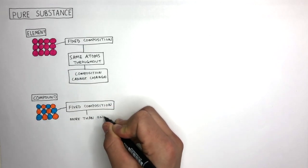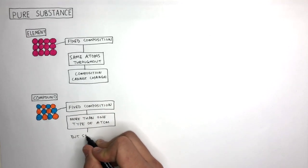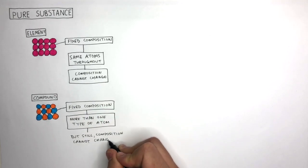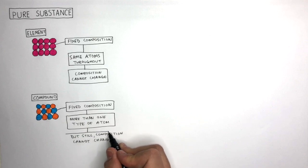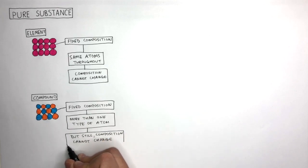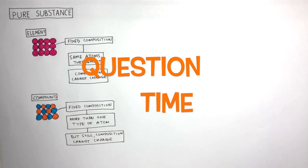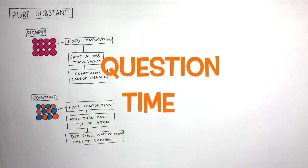Yes, there is more than one type of atom, but still the composition cannot change. This is because the atoms are held firmly in place and have a repeating regular pattern. It's question time. Attempt these questions to check your understanding.